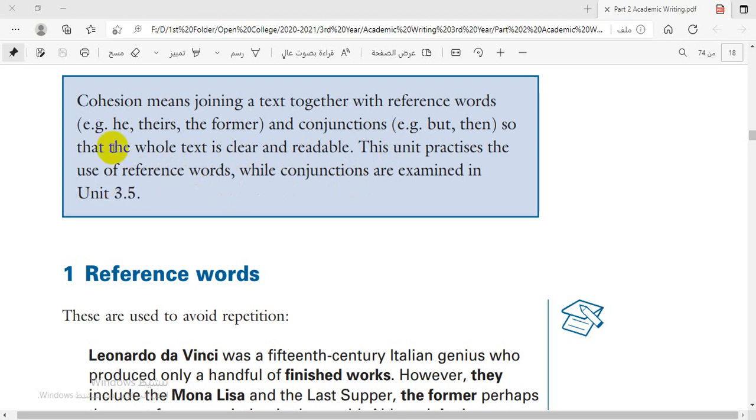Let's now capture the definition of cohesion. Cohesion, the definition begins with the word joining. So underline the word joining text together with reference words, leave this under two brackets, and conjunctions underline this. Leave these examples out. So we complete so that the whole text is clear and readable. I'm going now to read the definition of cohesion: joining a text together with reference words and conjunctions so that the whole text is clear and readable. This is the definition of cohesion.